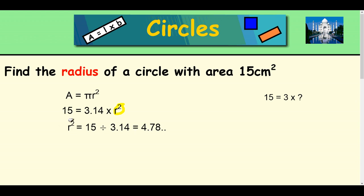Now, I don't want r squared, I just want r on its own. So, you need to undo r squared, which is square root. So, to square root 4.78, I get 2.2 centimeters.